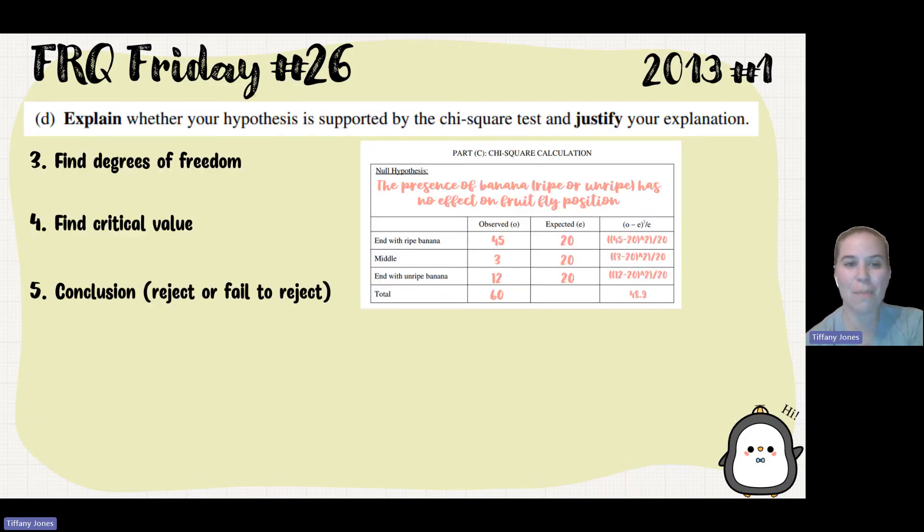So I now need to figure out my degrees of freedom. So my degrees of freedom is the number of different options I have coming out minus one. So since I have end of ripe banana, middle, and then end with unripe banana, that gives me three. Three minus one gives me two. So my degree of freedom is going to be two here.